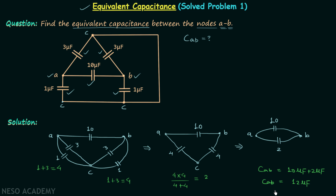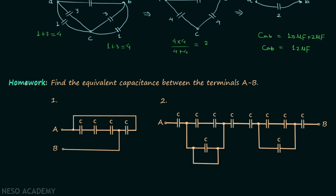I hope the problem was clear. Now we will move on to the homework problems. I have two homework problems and in both you are required to calculate the equivalent capacitance C sub AB between terminals A and B. Calculate C sub AB in both problems and once you have your answer, post it in the comment section.